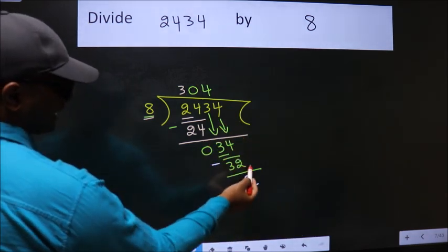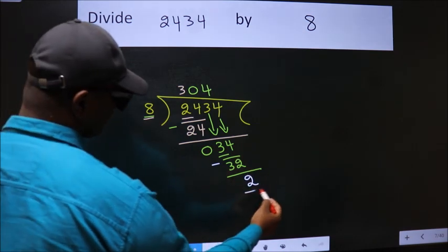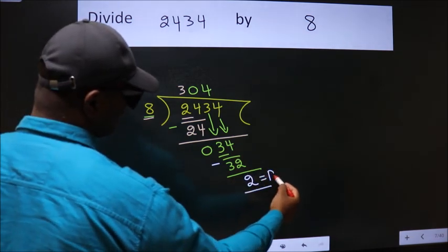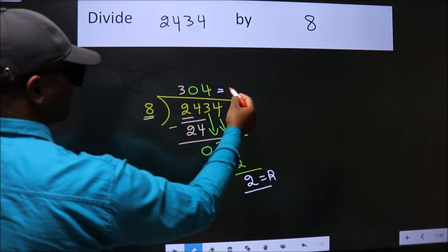No more numbers to bring it down. So, we stop here. This is our remainder. This is our quotient.